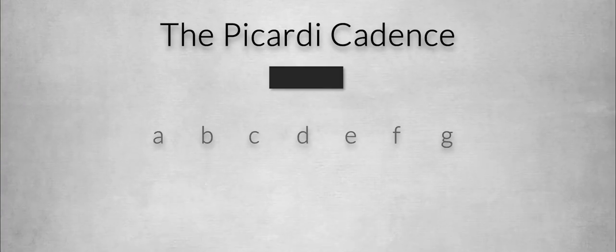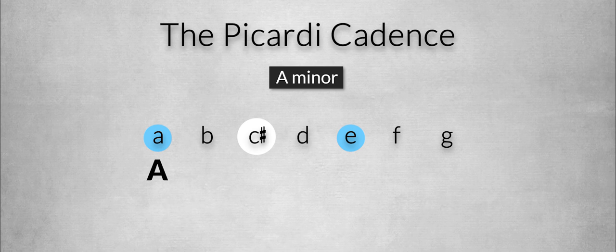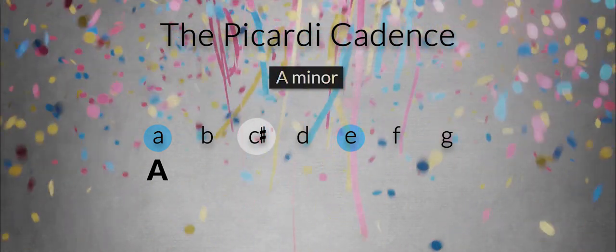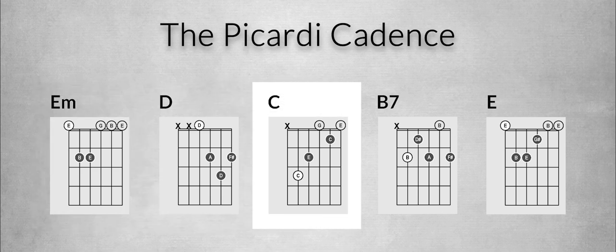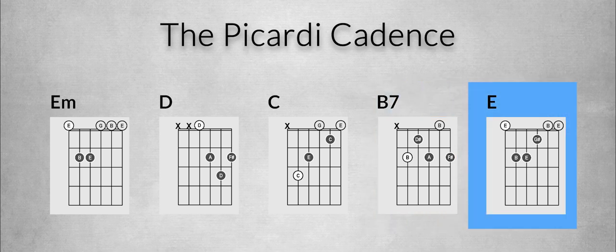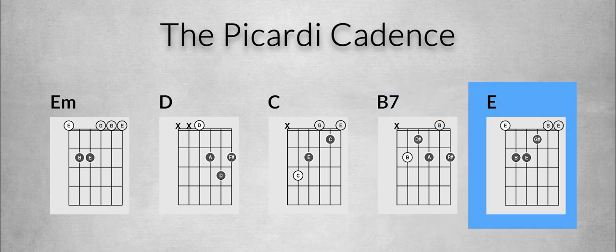One of those cadences is often used in classical music and in pop. It is the so-called Picardie cadence, or the Picardie third, where the minor tonic is replaced by a major version of the tonic. The minor third in the minor scale is raised to a major third, and that creates a musical happy ending, or happy third as they call it. A well-known song like I'll Be Back by the Beatles uses this Picardie cadence too.